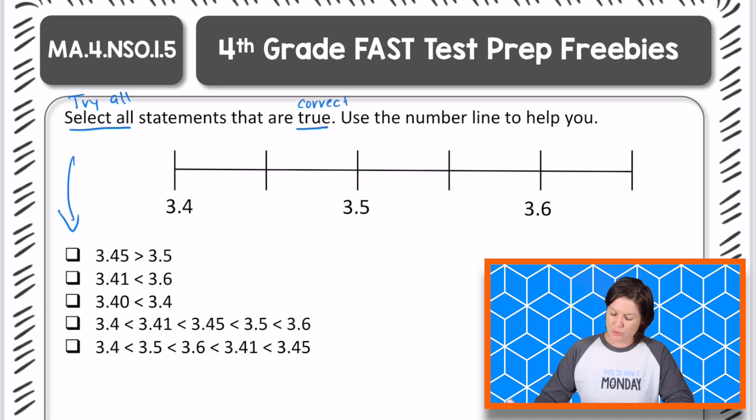So these down here, which one of those are true? We can use this number line here to help us. We have 3.4 and a halfway point, 3.5 with a halfway point, 3.6, and then another halfway point. So I am going to use this number line to help me.